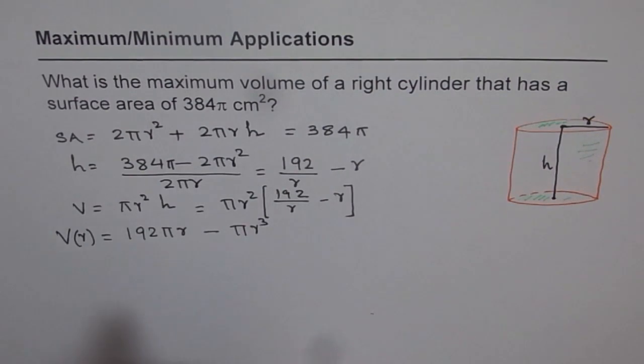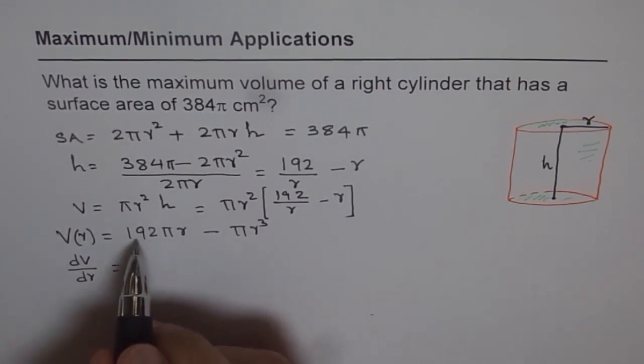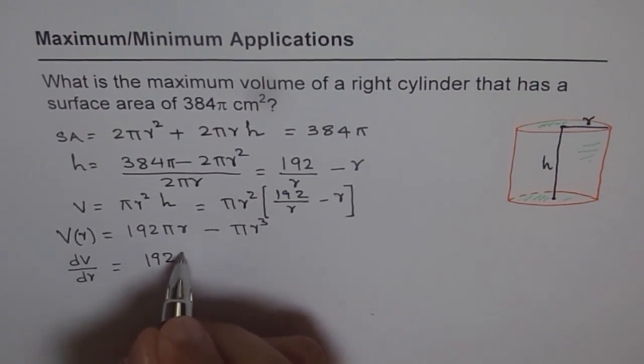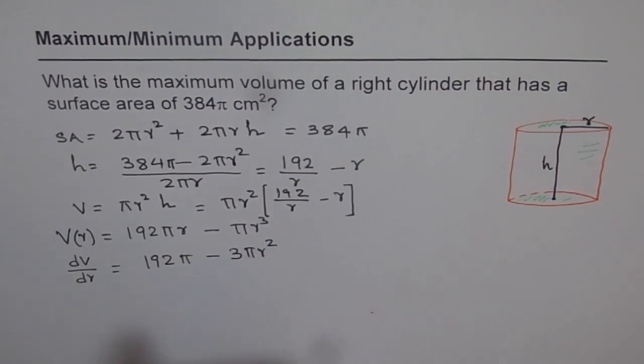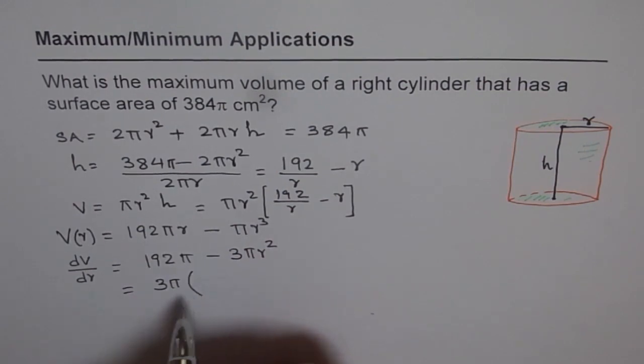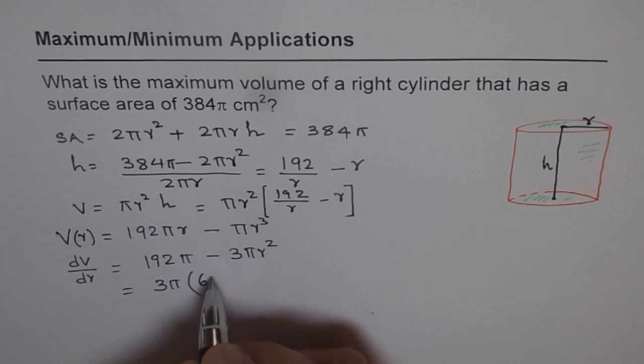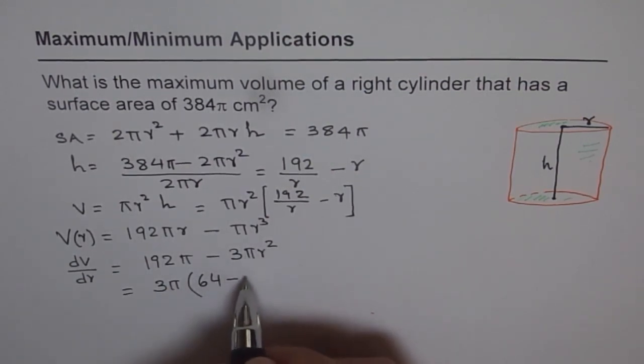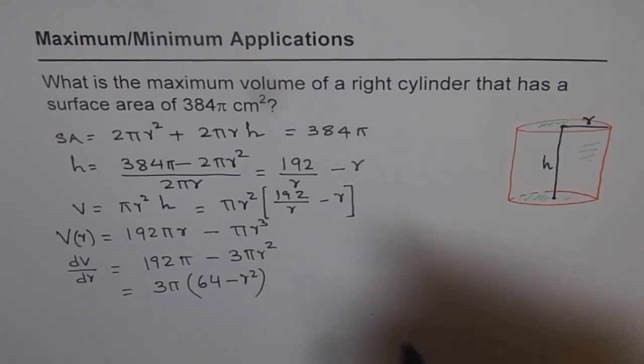Now we can differentiate this equation with respect to r. So dV/dr equals 192π from the first term, and here you get 3πr². These can be combined. We can take 3π common. So when I take 3π common, 192 divided by 3 gives me 64. So I get 3π(64 - r²). That is the derivative.